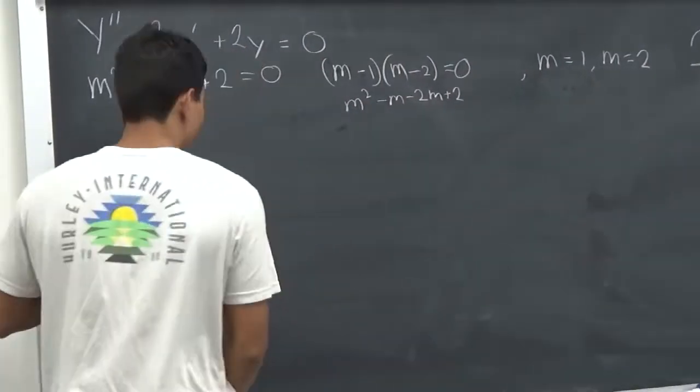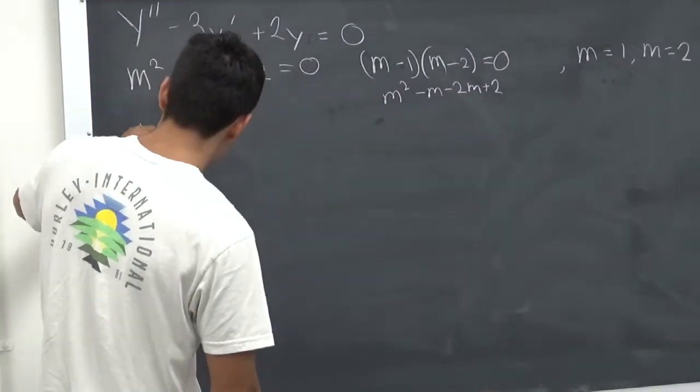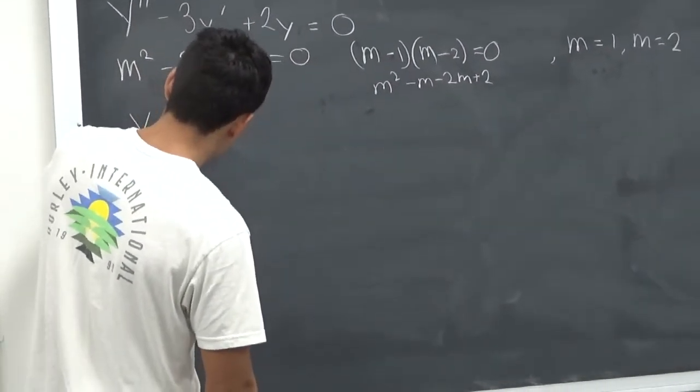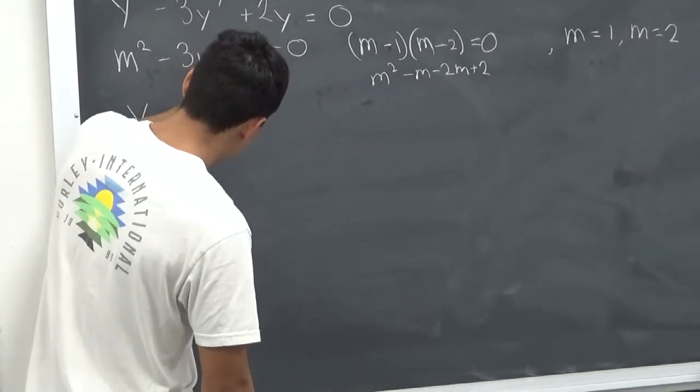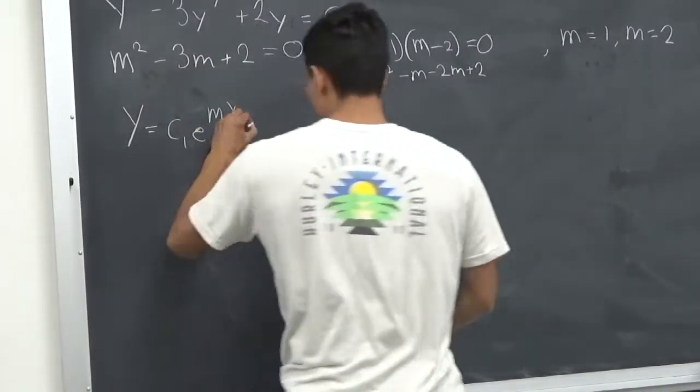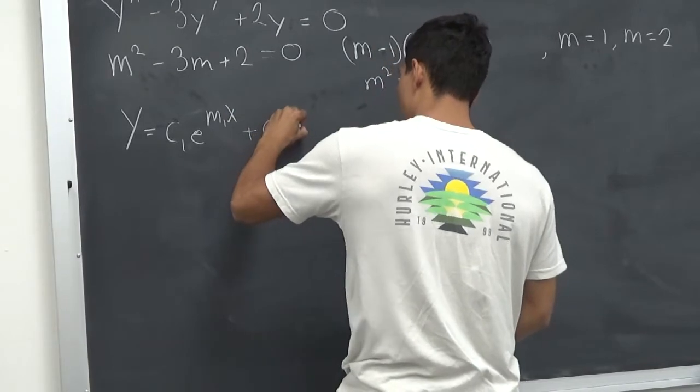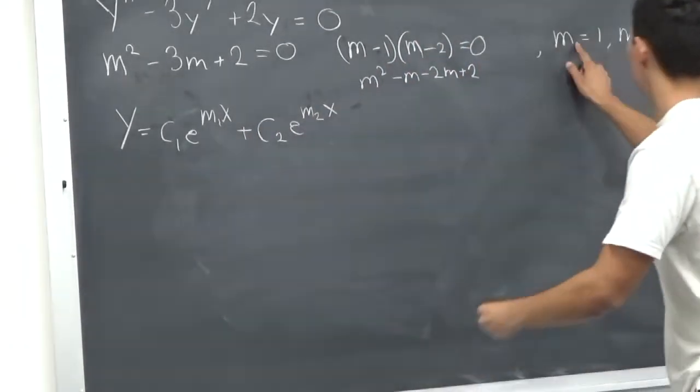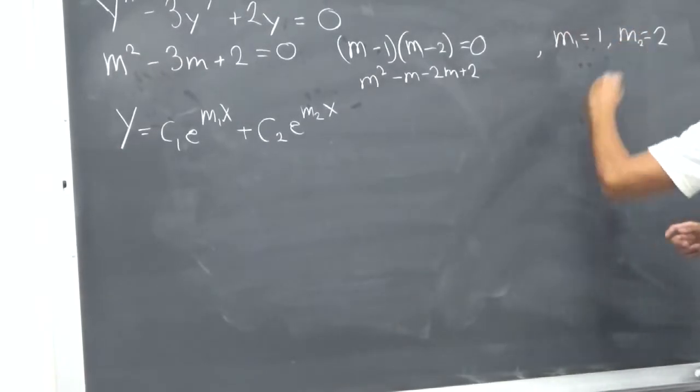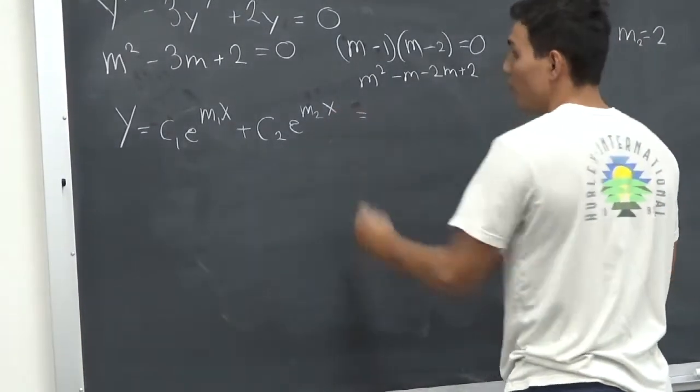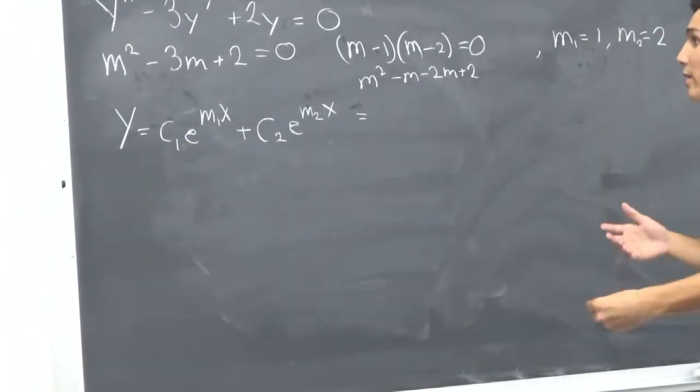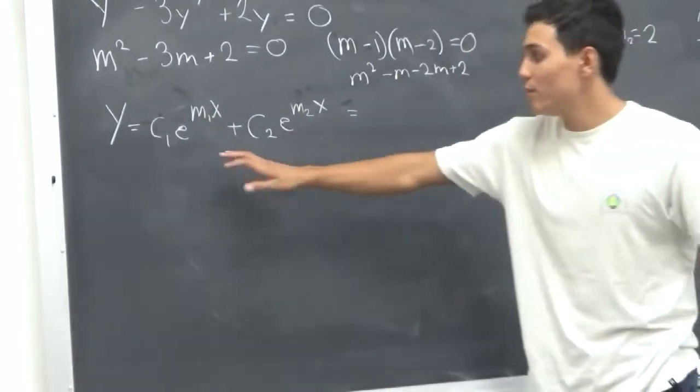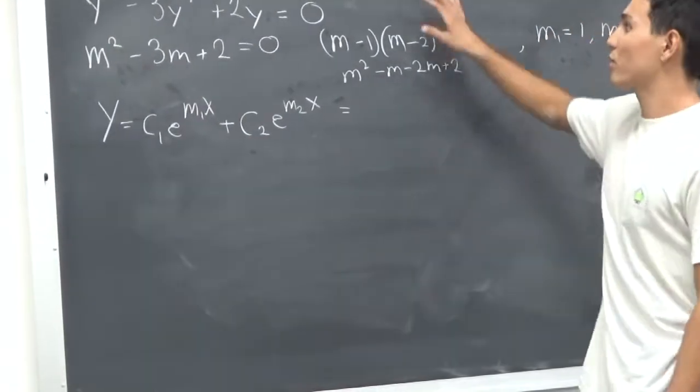we can use our general idea that we have a solution of the form C1 e to the m1x plus C2 e to the m2x. So this would be m1, this would be m2, and C1 and C2, we don't know what they are. That's why we just call them C1 and C2. The only way to find what C1 and C2 are is if we had initial conditions, but we don't.